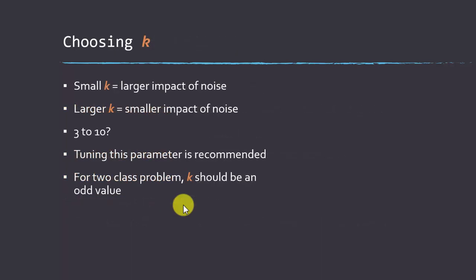Choosing K requires determining what number of neighbors makes the most sense. A smaller K gives more local noise sensitivity; a larger K averages out more and reduces local noise impact. It's been suggested that 3 to 10 is generally good, but there's no hard rule — you really want to optimize it by testing different K values and seeing which provides the best performance. For a two-class problem, try to make K odd to avoid ties. For more than two classes, even or odd doesn't matter as much.